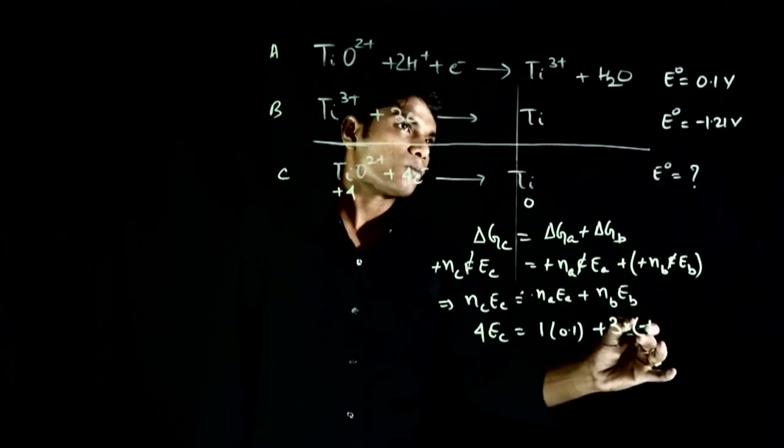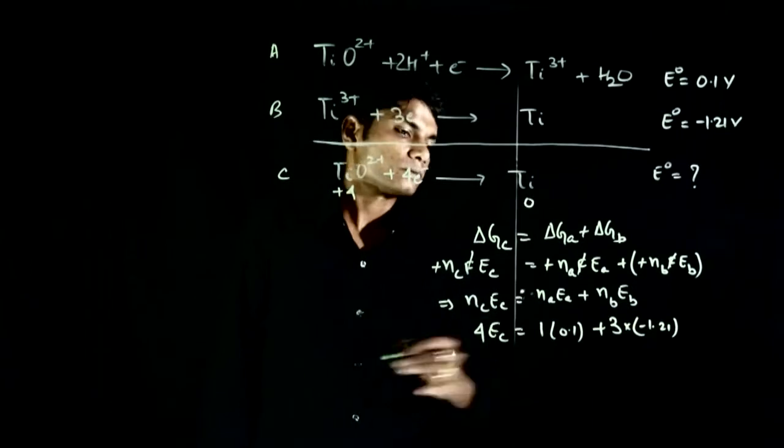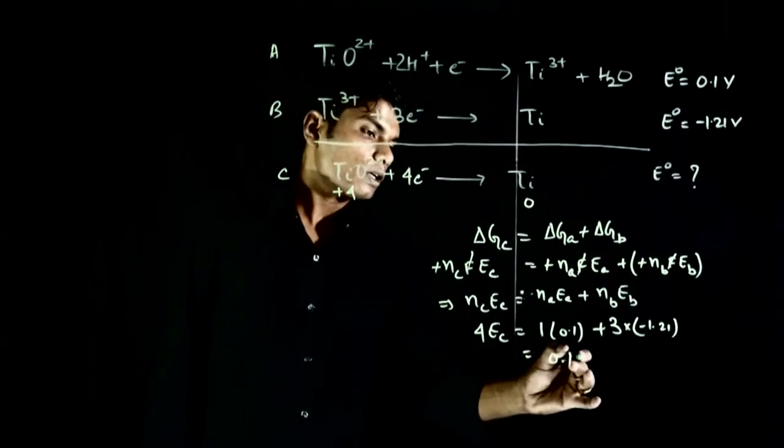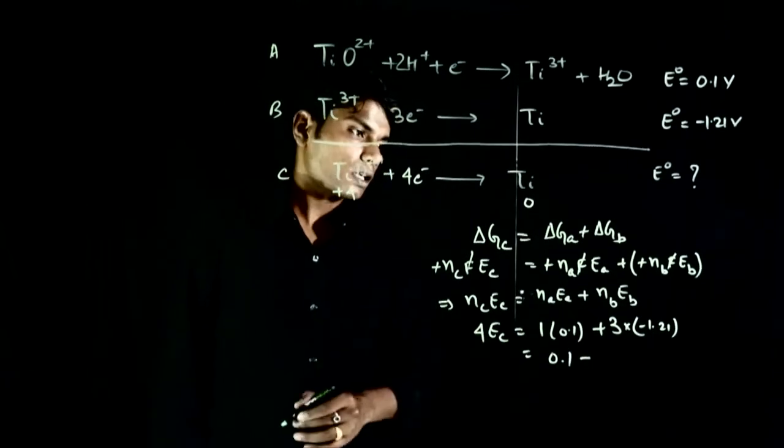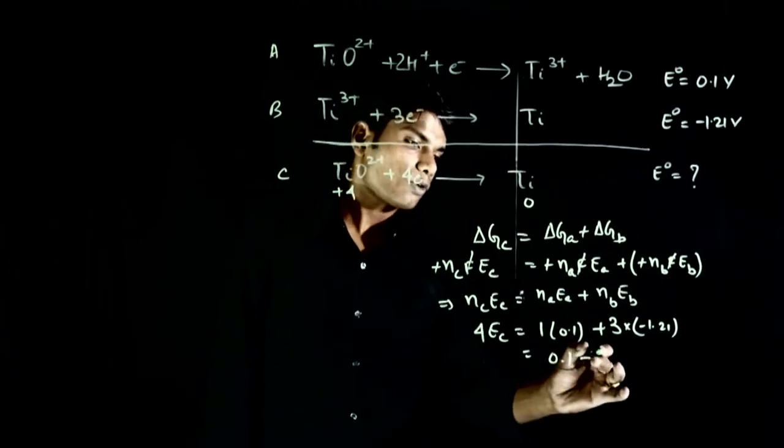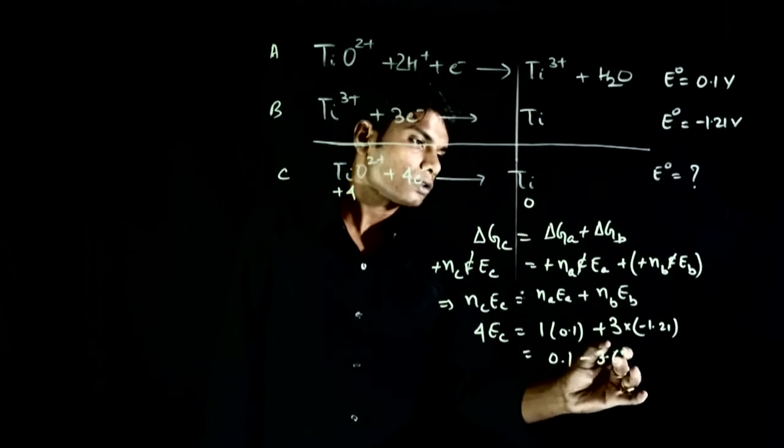minus 1.21. We will add these. So, 0.1 minus will go, 1.2 minus 3.6, 3.63.